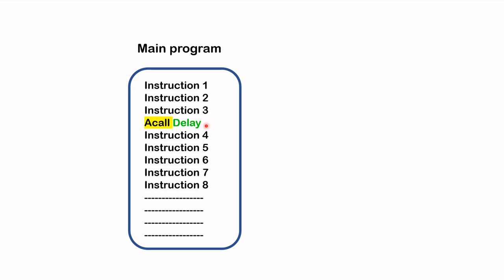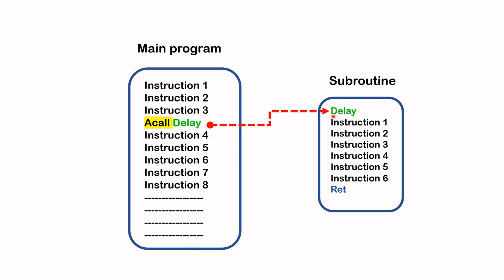When the 'call delay' is executed, the control of the program is handed over to the subroutine. Inside the delay subroutine there are several instructions. The last instruction of a subroutine is the RET instruction, which stands for return, and this will return control of program execution back to the main program.